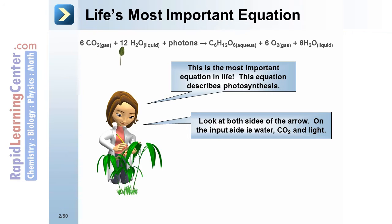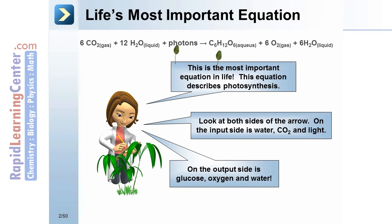Look at both sides of the arrow. On the input side is water, carbon dioxide, and light. On the output side is glucose, oxygen, and water.